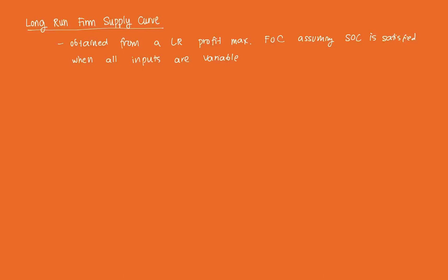If you recall, the profit maximizing equation — how we derive the profit of a firm — is that the firm's objective is to maximize profit. We denote that as π, which is some function of q. This is equal to revenue less its long-run cost, where revenue equals p times q, minus long-run cost, which is some function of q. Because every cost we have now is a variable cost, it is a function of q.